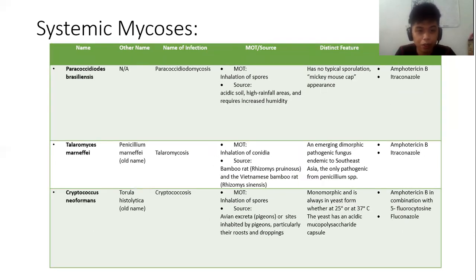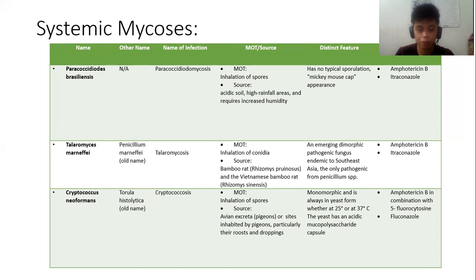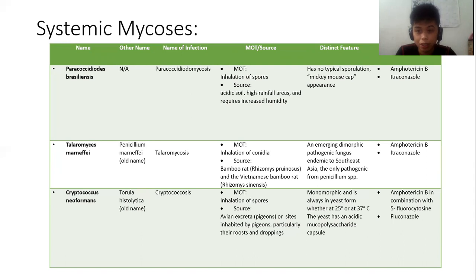Paracoccidioides brasiliensis causes paracoccidioidomycosis. MOT is inhalation; source is acidic soil in high-rainfall, high-humidity areas. Distinct feature: has no typical sporulation and has a mickey mouse appearance under microscopy. Treatment: Amphotericin B and itraconazole.